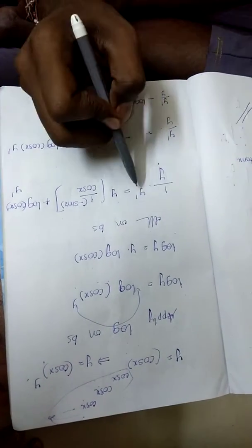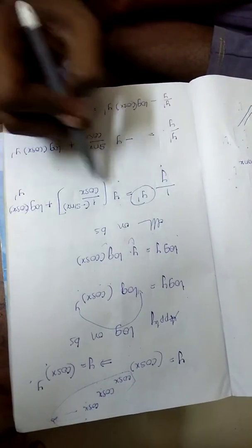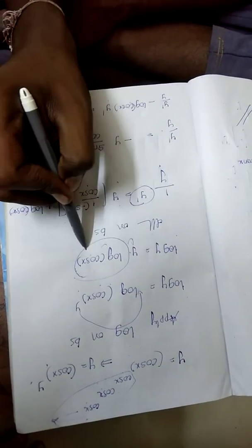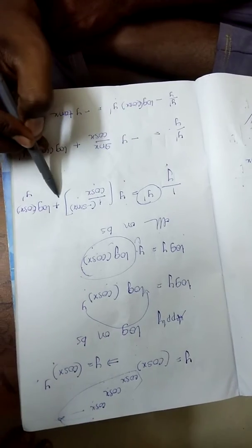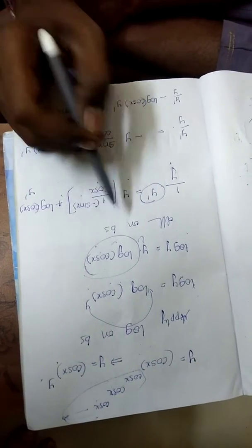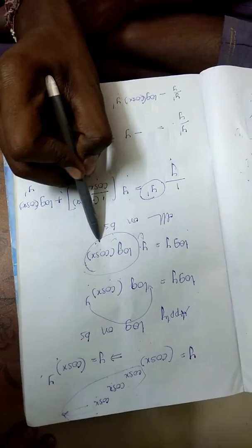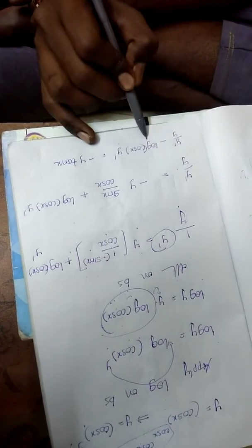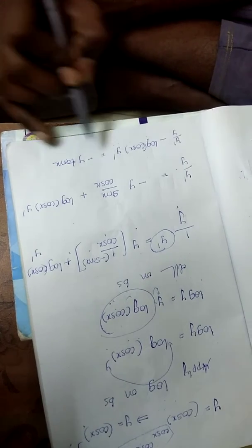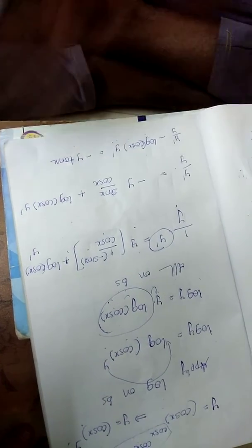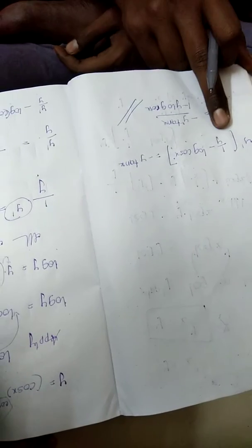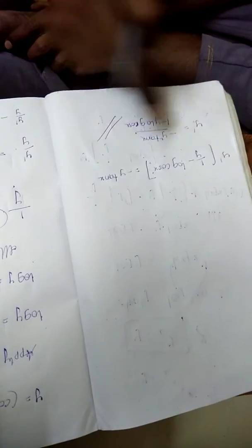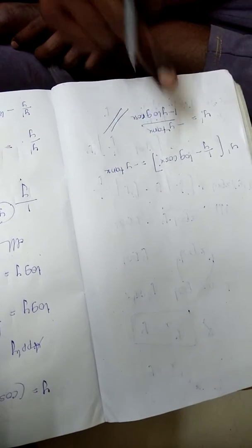Differentiating using the product rule on the right side: 1 by y times y dash equals y times minus tan x plus log cos x times y dash. Rearranging: y dash by y minus log cos x times y dash equals minus y tan x, so y dash is equal to minus y squared tan x divided by 1 minus y log cos x.